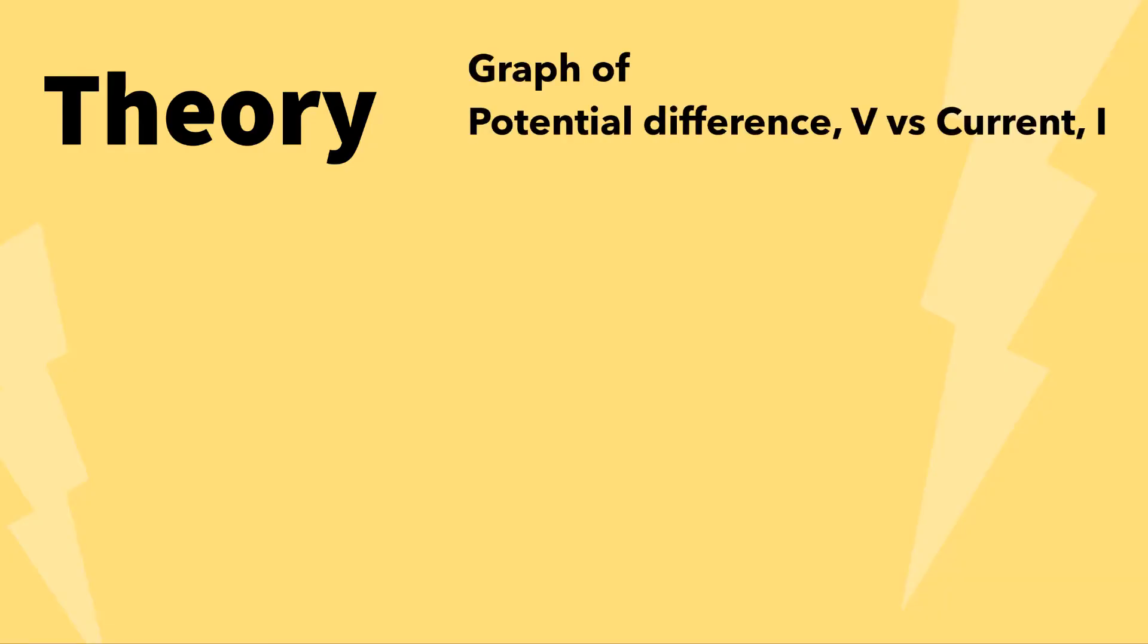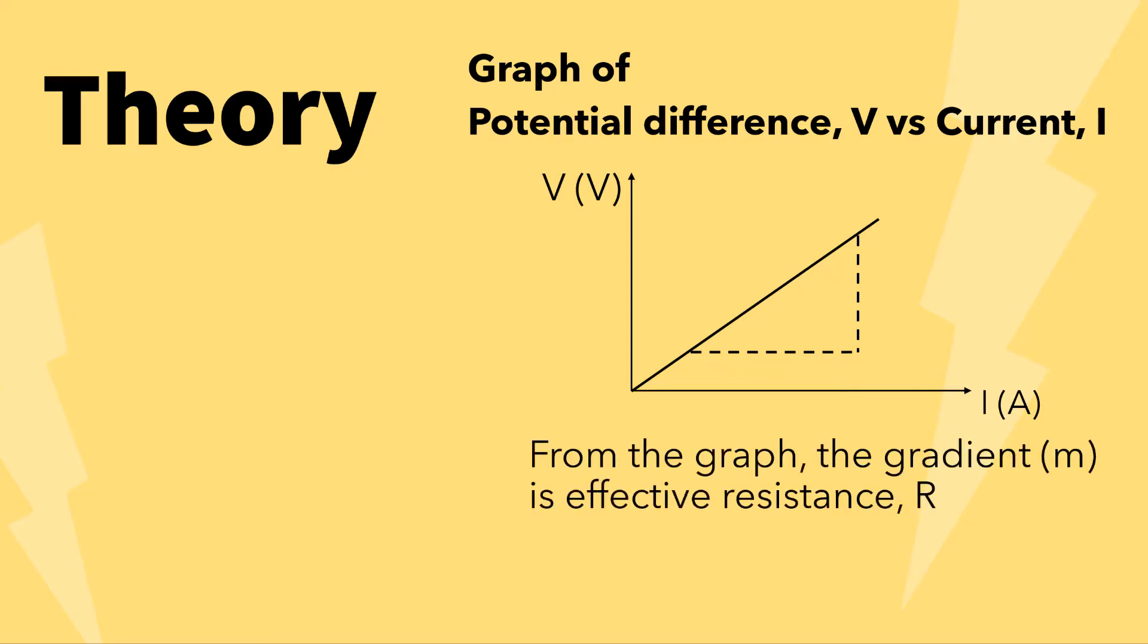To verify V equals IR, the graph of potential difference V versus current I are to be plotted. From the graph, the gradient M is the effective resistance.